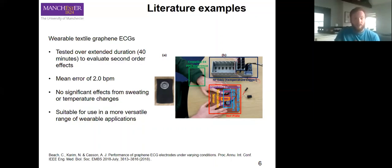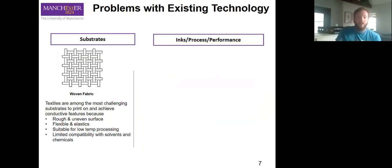Compared to existing technology, we want to try and improve some of these issues. A lot of the time we print onto substrates or woven fabrics, and these are some of the most challenging substrates to print on, especially if we want to achieve good conductivity. Often it's a balancing act between getting your materials to adhere to these substrates and getting good electrical performance from them.